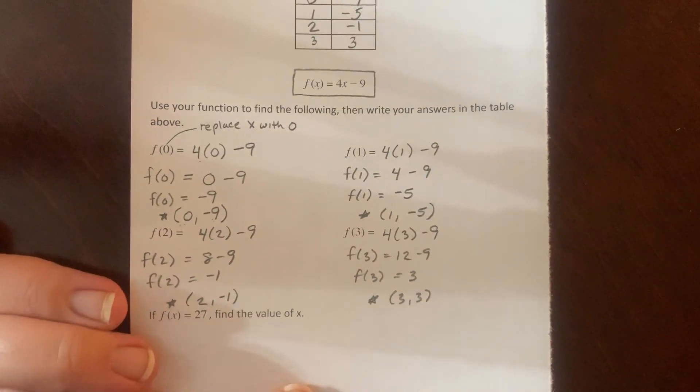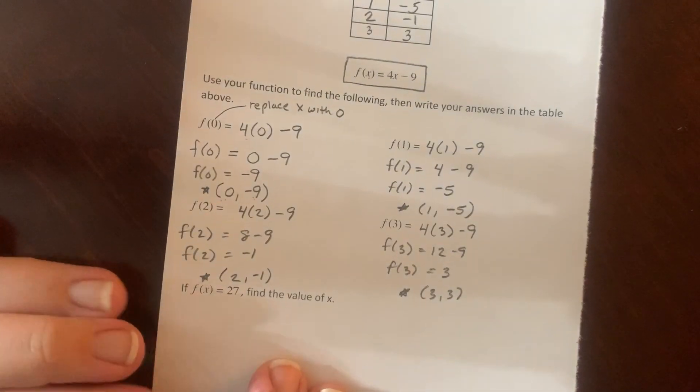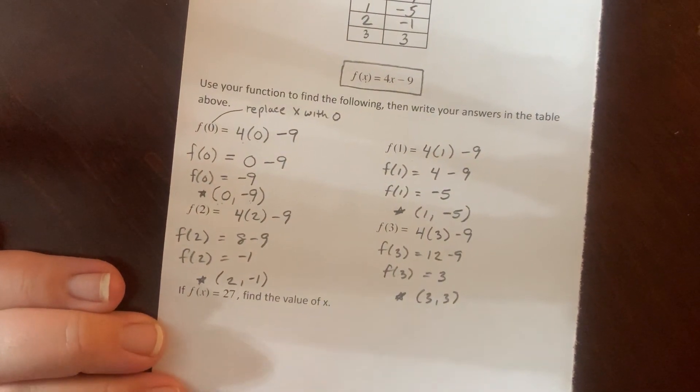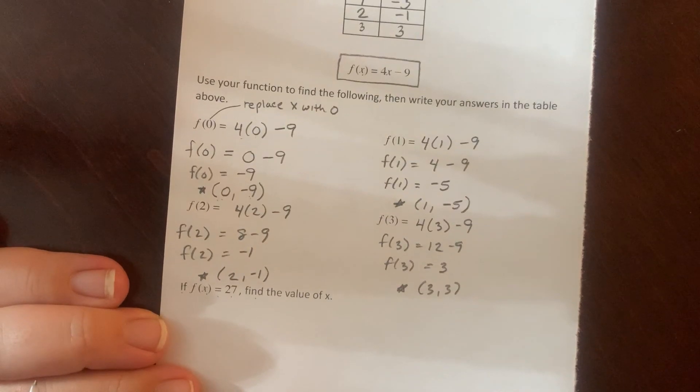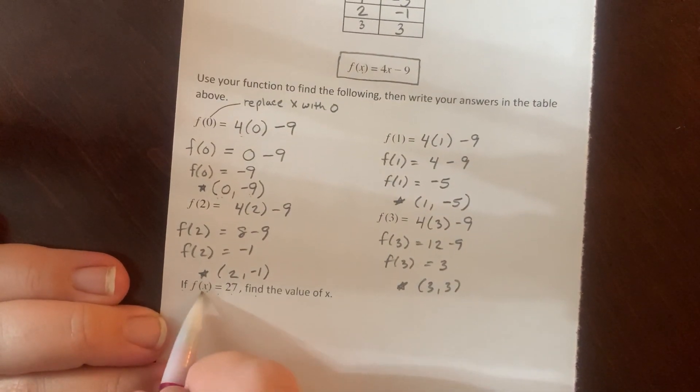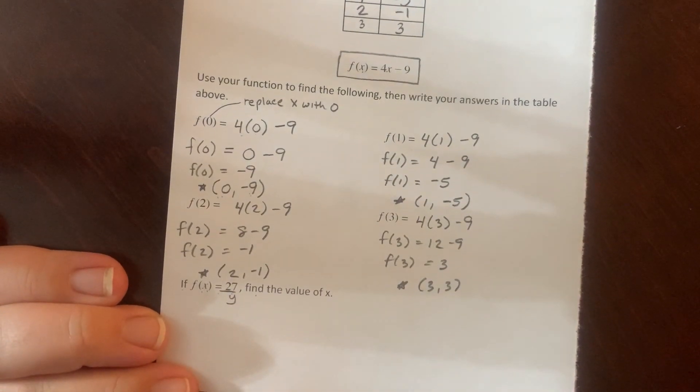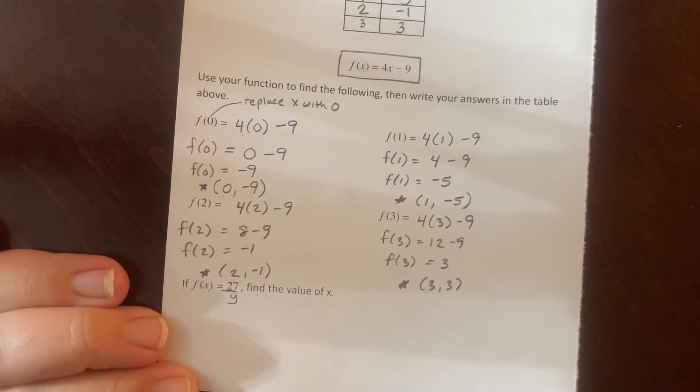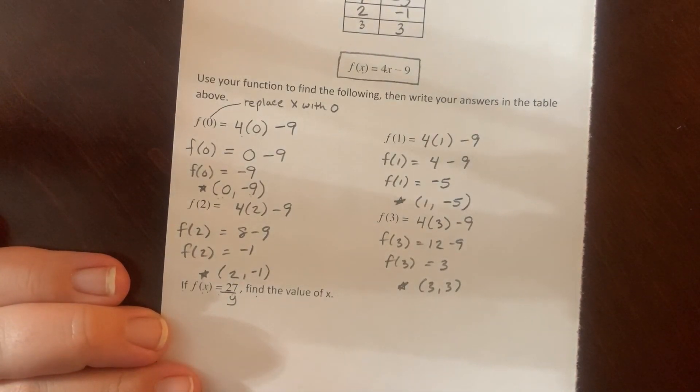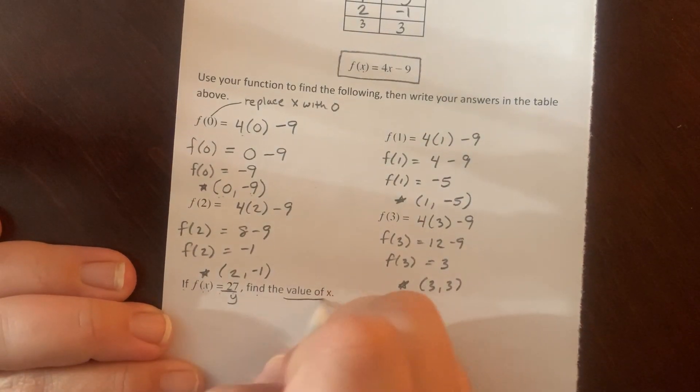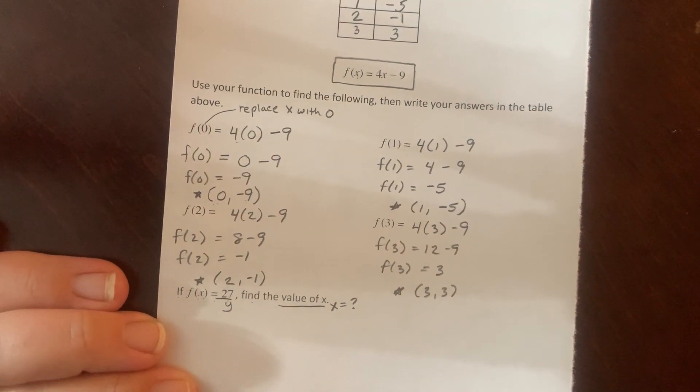Okay, feel free to pause that, rewind it, watch it, rewatch it if you need to, to catch that up. Okay, now down here we have a different question. This time it says if F of X equals 27. So notice now they're not putting a number in for X, they're putting this number in for Y. So they're telling us Y is going to be equal to 27. So they're replacing the output. They're telling us the output is equal to 27. They want us to find the value of X, which means we don't know what X equals. We have to figure that out.